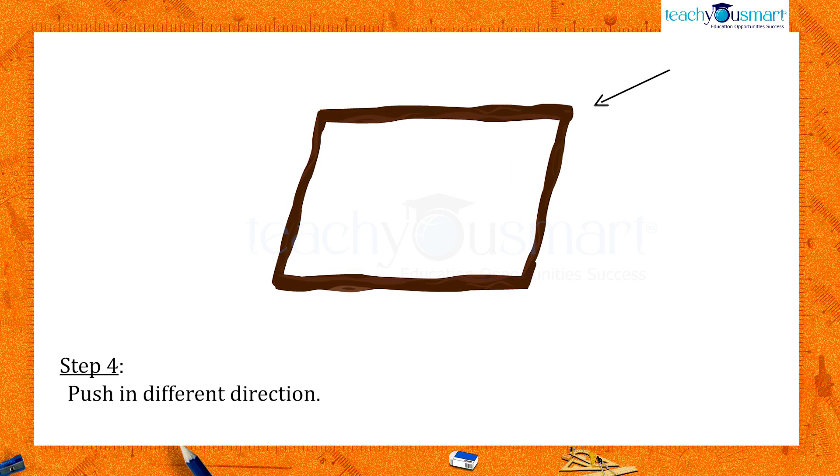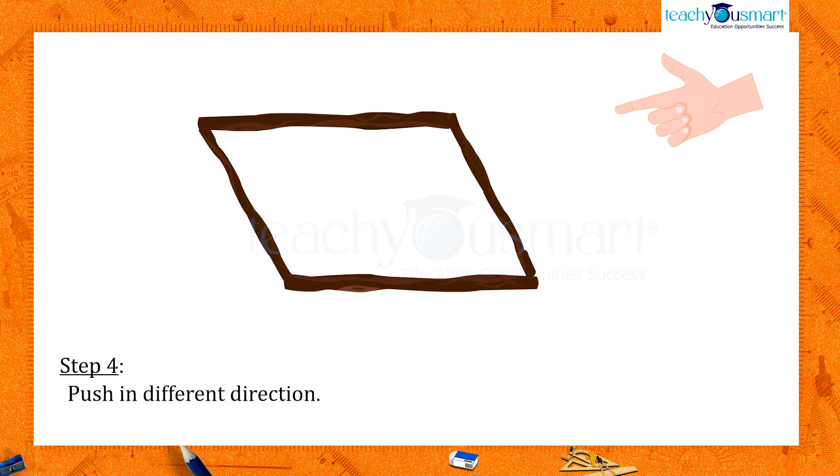Give another push to the newly obtained shape in a different direction. We get another quadrilateral, which is altogether different, yet the four measurements remain the same.